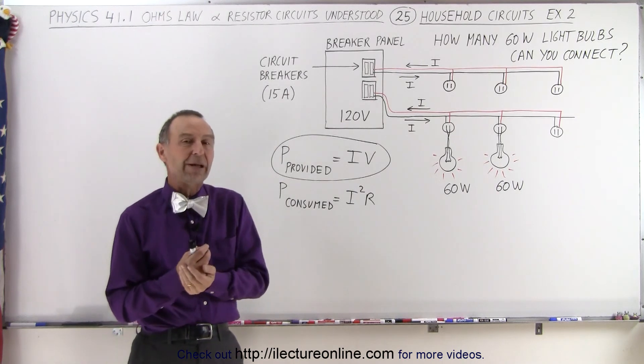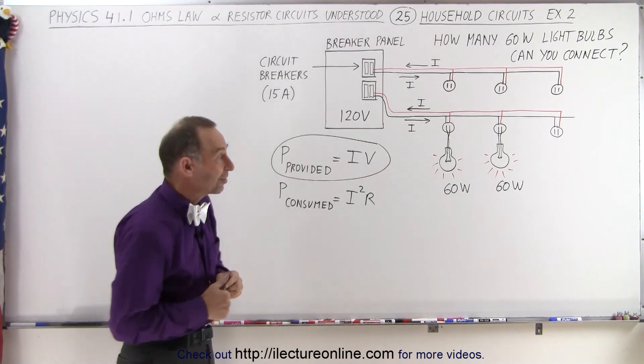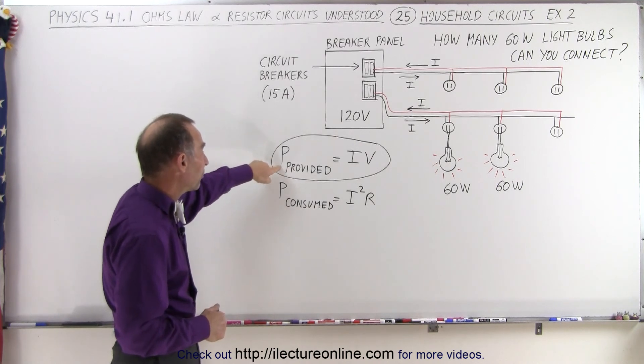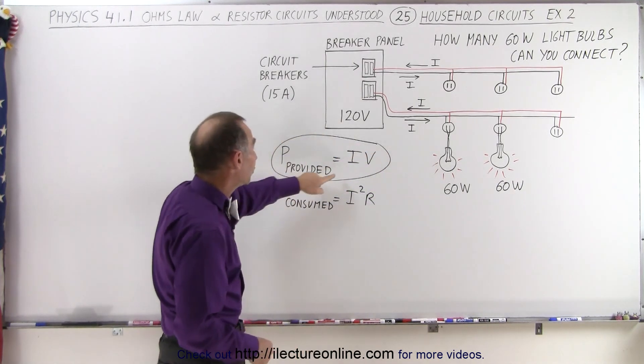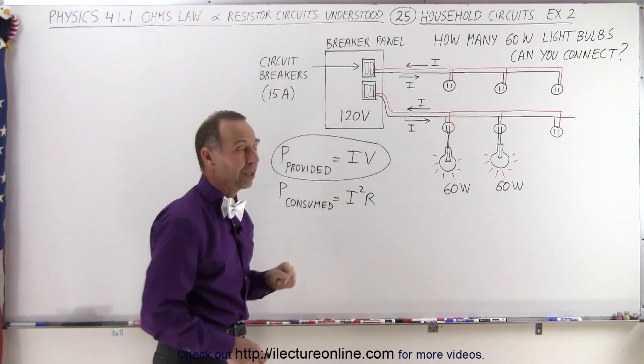So to do that we need to figure out how much current will flow through each light bulb. For that we use the equation that the power provided to the light bulb, which in this case would be 60 watts, is equal to the current to the light bulb times the voltage supplied.